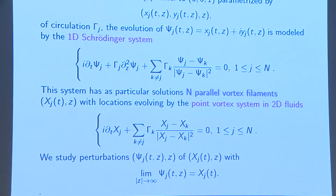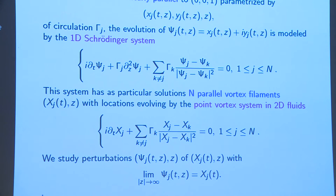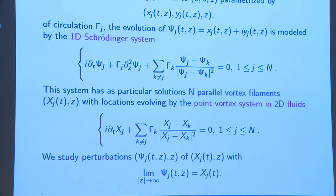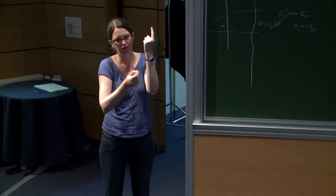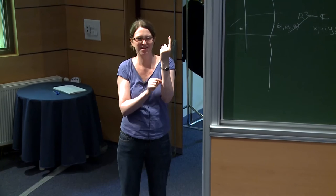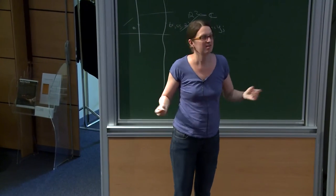There is also an extra term modeling the influence of other filaments on the j-th filament. This interaction is precisely the one that appears in the case of 2D fluids with point vortices — a reduction to 2D. One thing that one could criticize for this model is that, in some sense, the influence on the j-th filament from the other filaments is supposed to come only at fixed heights through the point vortex system, so you don't see interactions from filaments at other heights. But this is the only model we have.